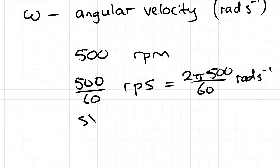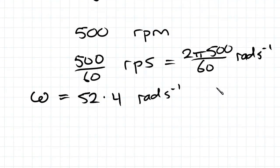Giving us a final answer of 52.4 radians per second is angular velocity. Finally, we know our r equals 0.1.